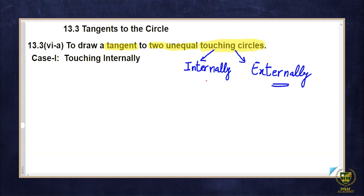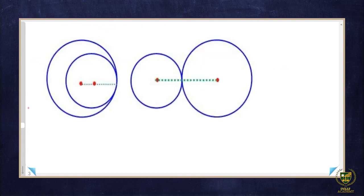We will understand how they touch internally and externally. As you can see in this figure, both figures show circles touching each other — this is their point of contact here, and here is the point of contact as well. The point of contact is the point where the touching occurs. Since we are talking about circles, the point of contact of the circle is here. I've made it slightly prominent so it is clear to you.